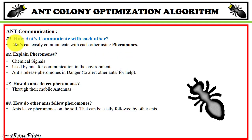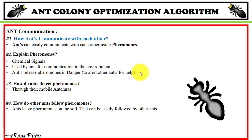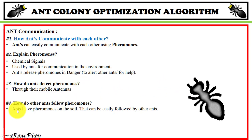Ant communication: ants communicate with each other using pheromones — chemical signals used for communication in the environment. Ants also deposit pheromones in case of danger to alert other ants or call for help. Ants detect pheromones using their two mobile antennas. Ants leave pheromones on the soil which can be easily followed by other ants — that is how they follow each other.